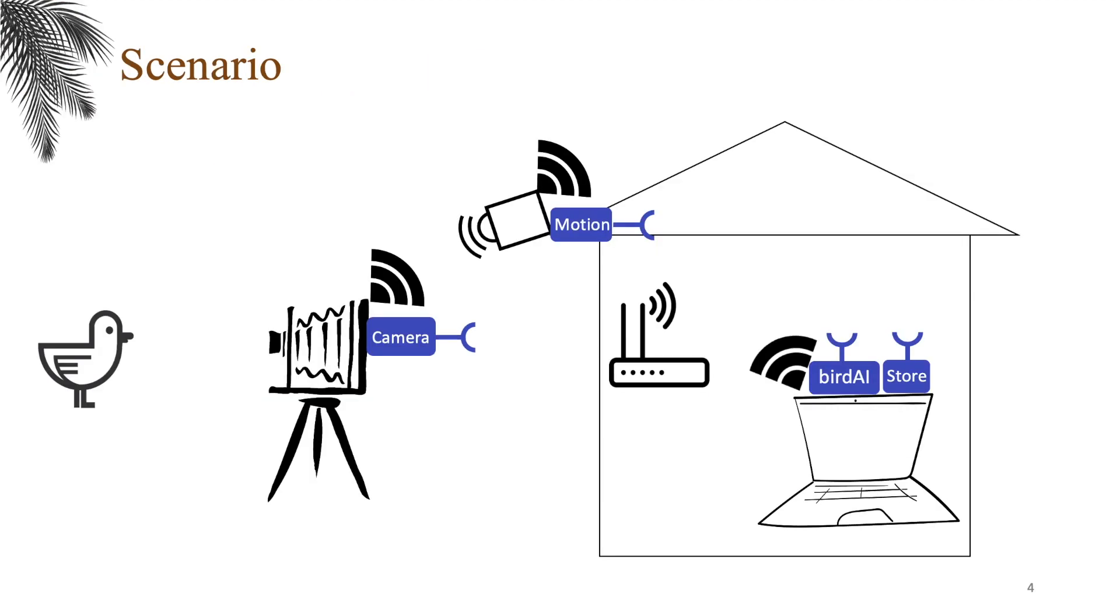In this video we use the following running example. We want to build a system that allows us to spy on the birds in our garden. The system consists of a motion sensor that detects movements in the garden and a camera that takes photos of the garden.